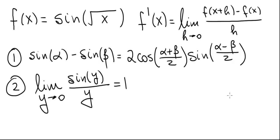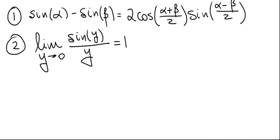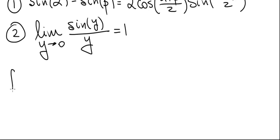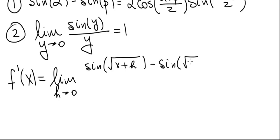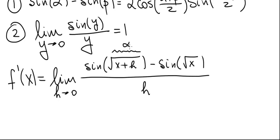These two results will be used in evaluating this derivative by definition. So f'(x) equals the limit as h goes to zero of sine(√(x+h)) minus sine(√x), divided by h. We can call √(x+h) alpha and √x beta and apply result number one.